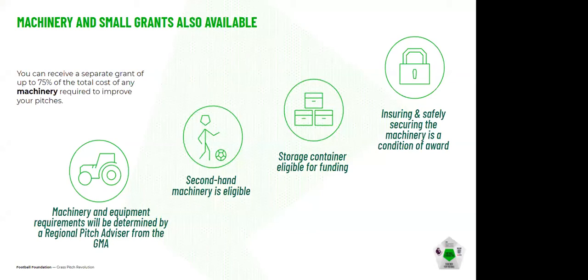In addition to the Grass Pitch Maintenance Fund, we can also provide grants for machinery. Within your Pitch Power report we'll ask information around what machinery you already have, and you can get recommendations from the regional pitch advisor around what equipment the club may need to bring pitches up to a good standard. The machinery purchased doesn't always have to be brand new — we can consider second-hand machinery where warranties are in place. We can also provide storage containers to store your machinery and materials, as long as all machinery is insured and secured safely.